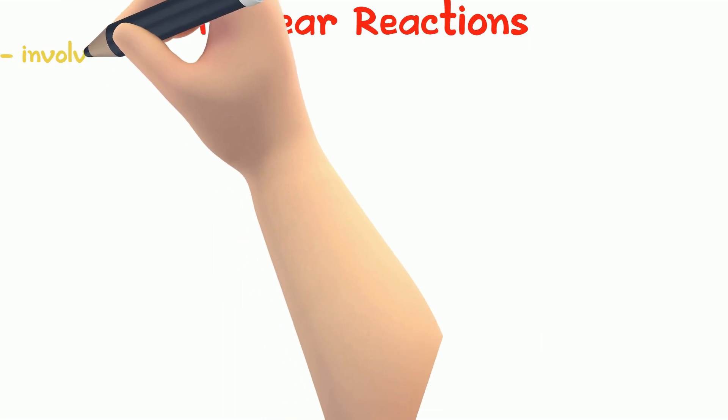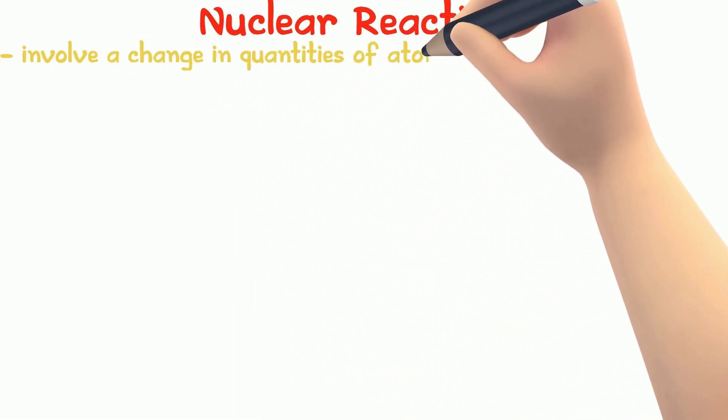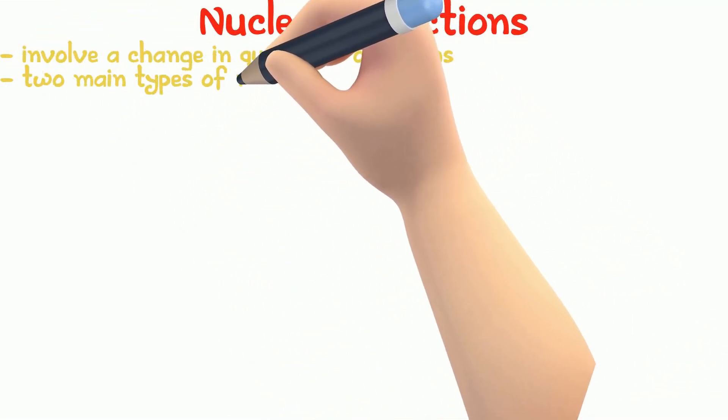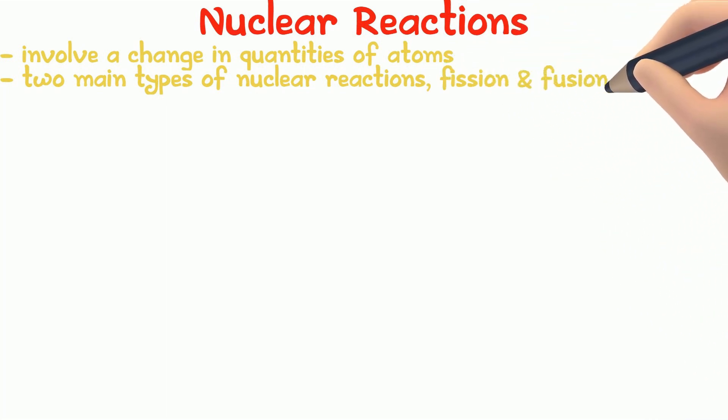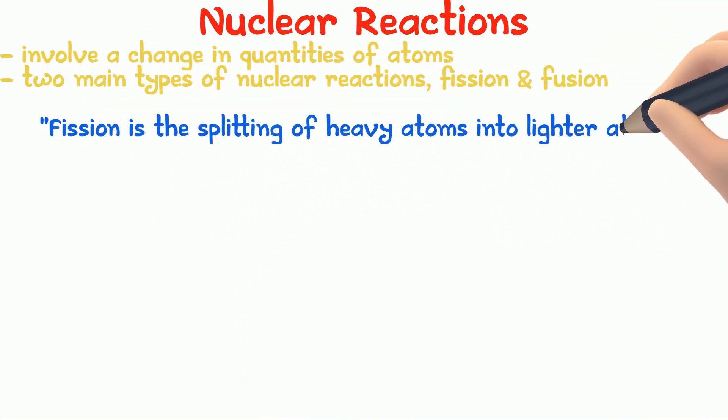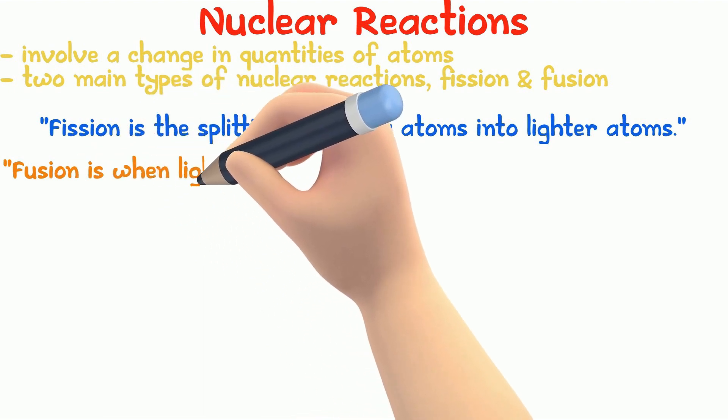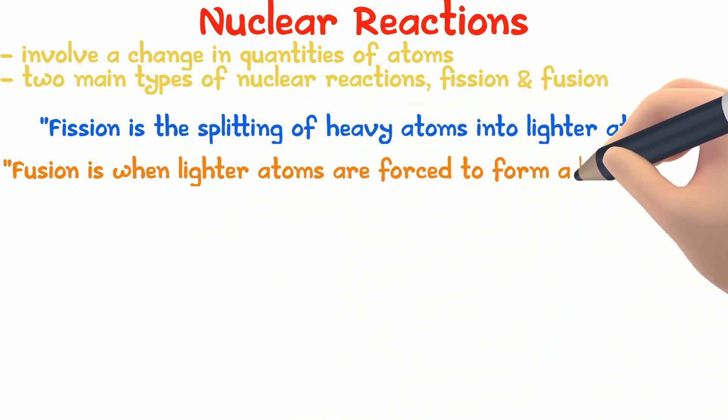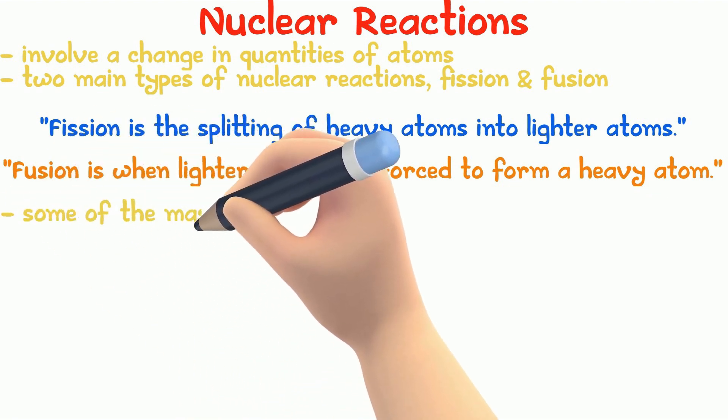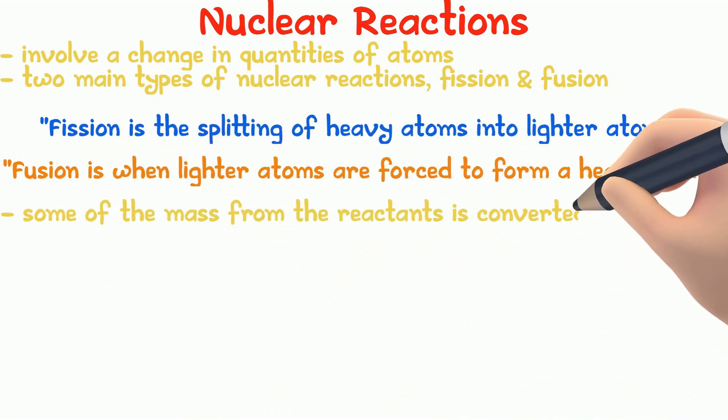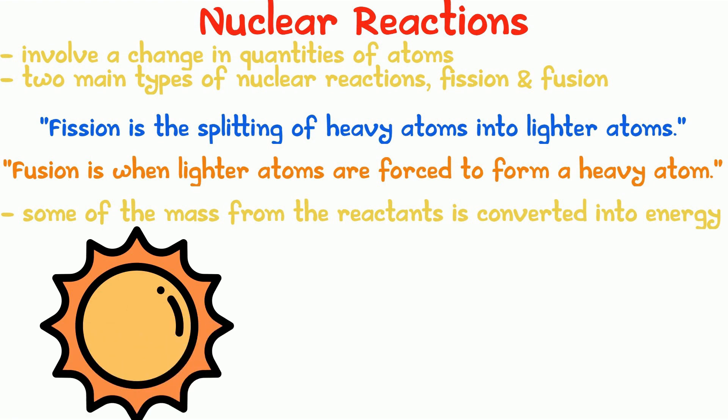Nuclear reactions involve a change in quantities of atoms. The two main types of nuclear reactions are fission and fusion. Fission is the splitting of heavy atoms into light atoms. And fusion is when light atoms are forced to join and form heavy atoms. In both processes, some of the mass from the reactants are converted into energy. The sun carries out fusion reactions, where hydrogen is converted into helium.